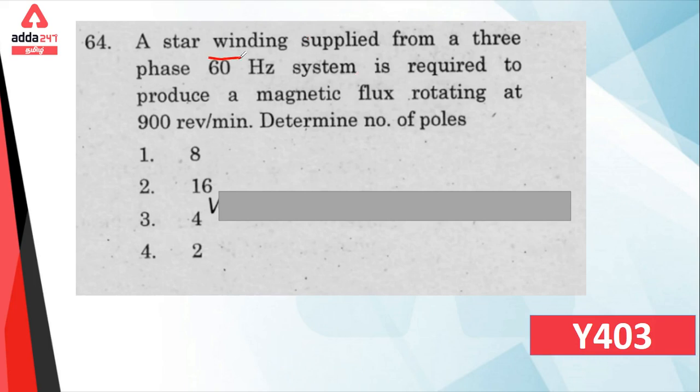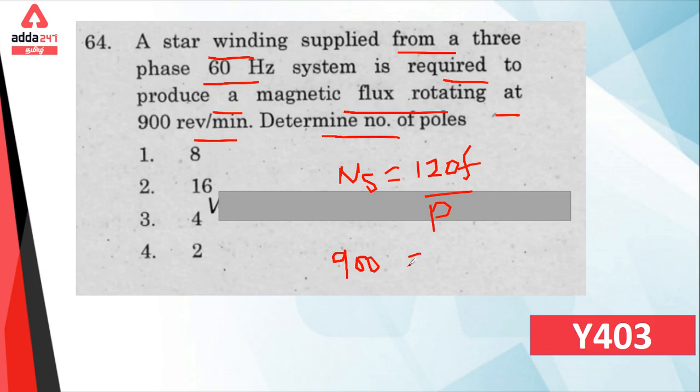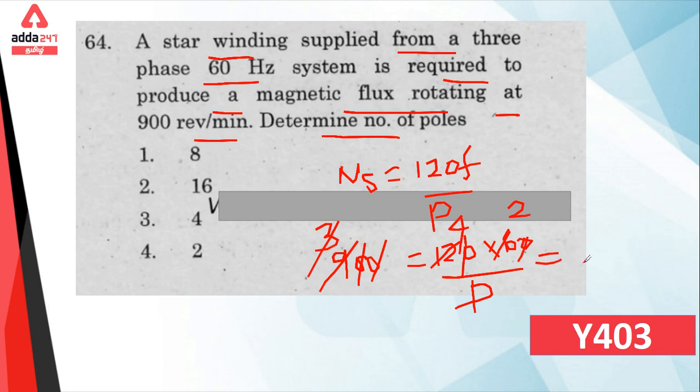A star winding supplied from a three-phase, 60 Hz system is required to produce magnetic flux rotating at 900 RPM. Number of poles? Simple. The synchronous speed is 120f/p. We know synchronous speed is 900, frequency is 60. So 120 times 60 divided by poles equals 900. Solving, poles equal 8.